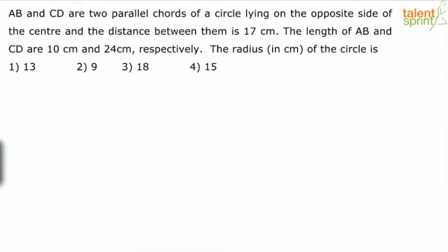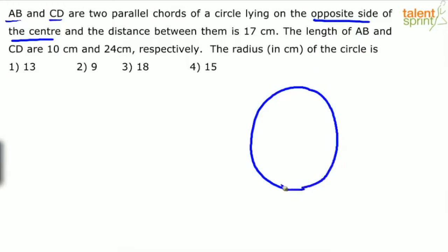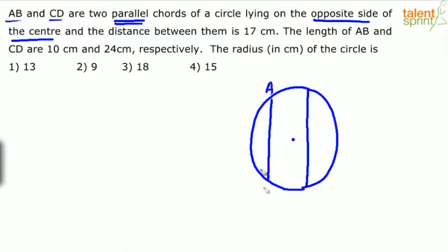So understand what it says: AB and CD are two parallel chords lying on the opposite side of the center of a circle. So basically there is a circle and here is the center. Now there are two chords AB and CD which are parallel and they lie on the opposite side of the center. So this is called AB and this is called CD. Remember you need to take them on the opposite side. Then he says the distance between them is 17 cm. So if you draw a line here, this distance is given as 17 cm.